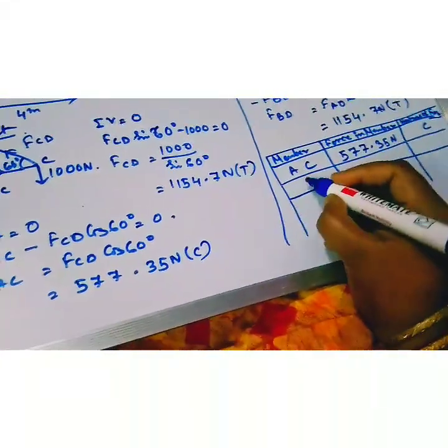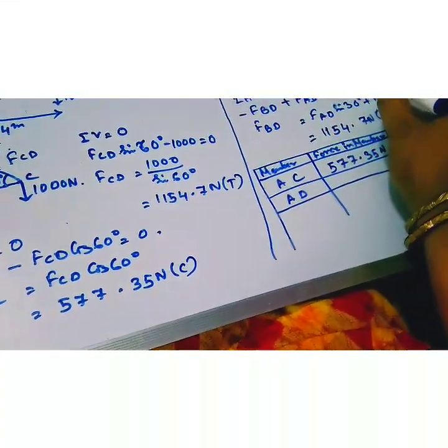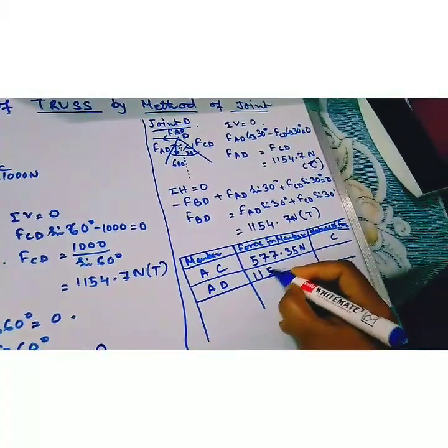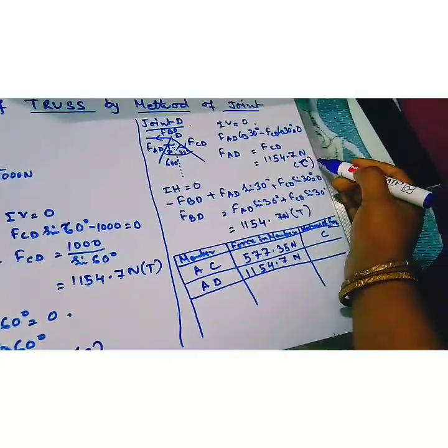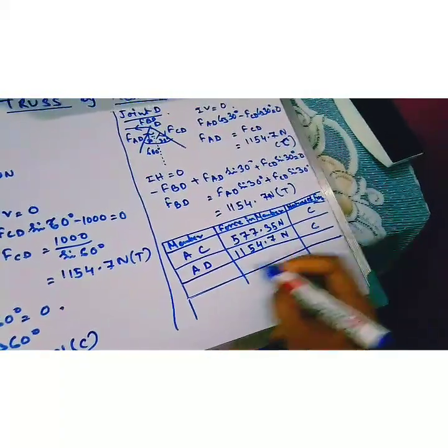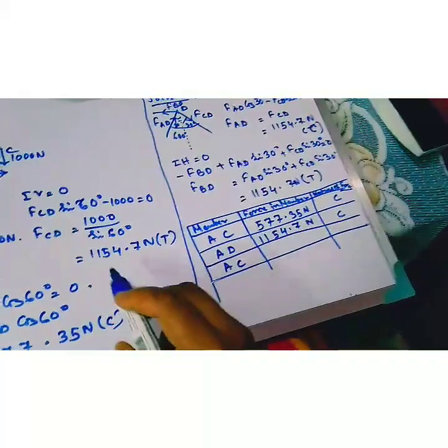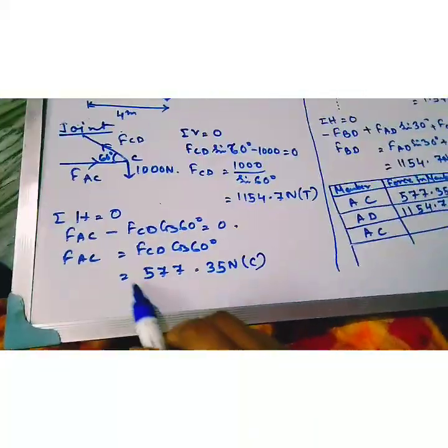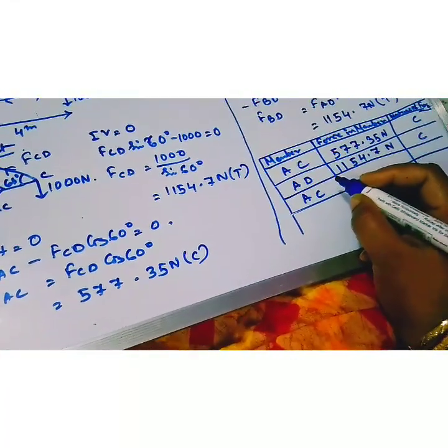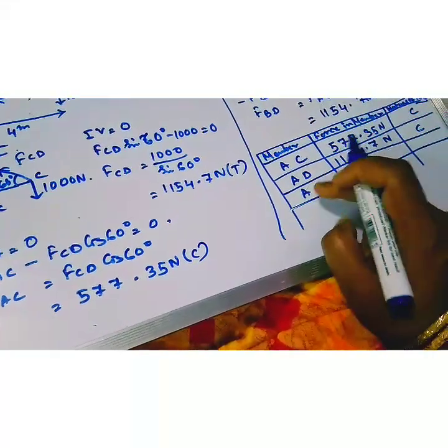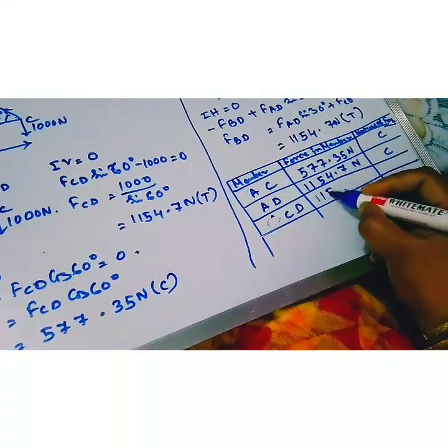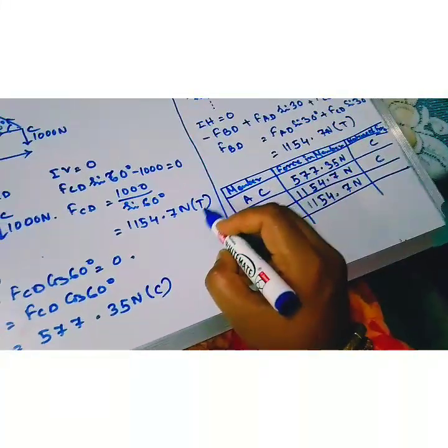Then, AD. AD is 1154.7 newton. Nature is compression. Then, CD. CD is 1154.7 newton. Nature of the force is tension.